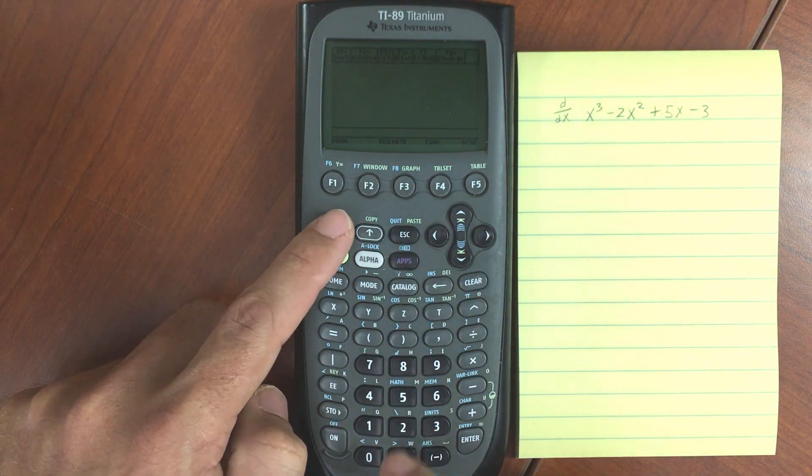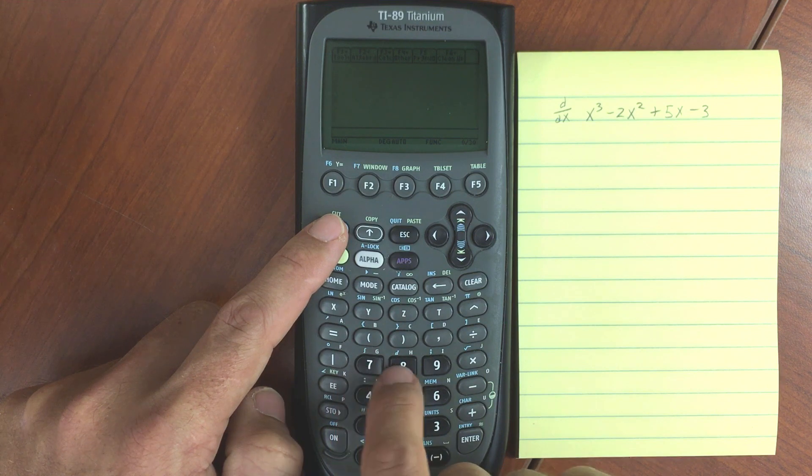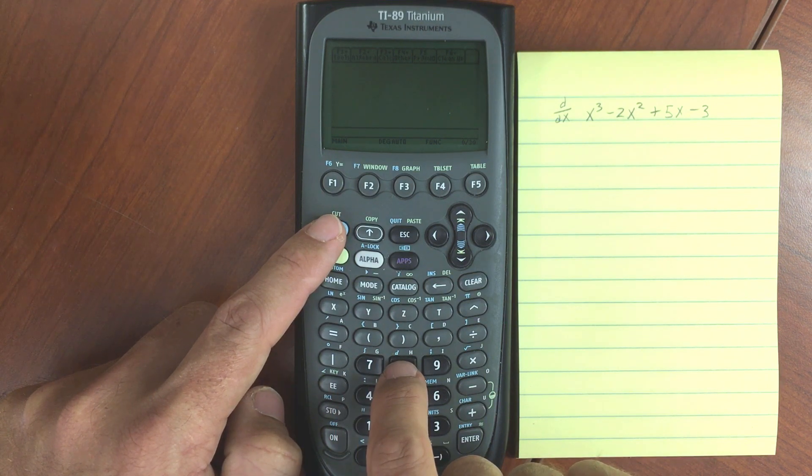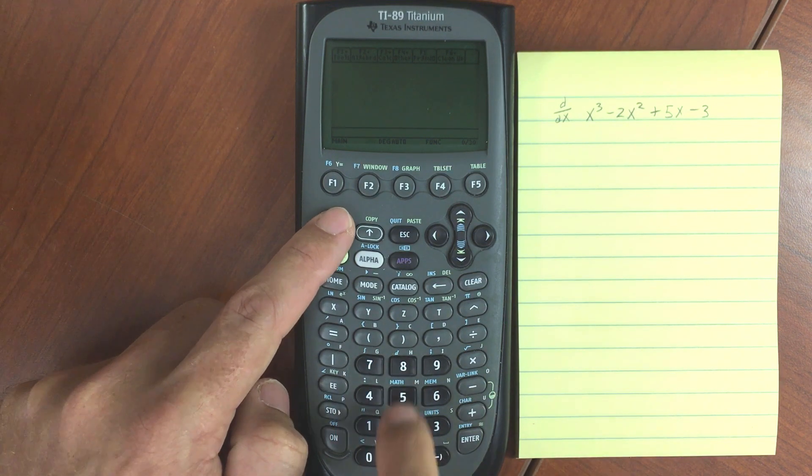Or on the keyboard there's just the shortcut. You have integral right above the number 7, and you have a derivative right above the number 8. I'm gonna do that.